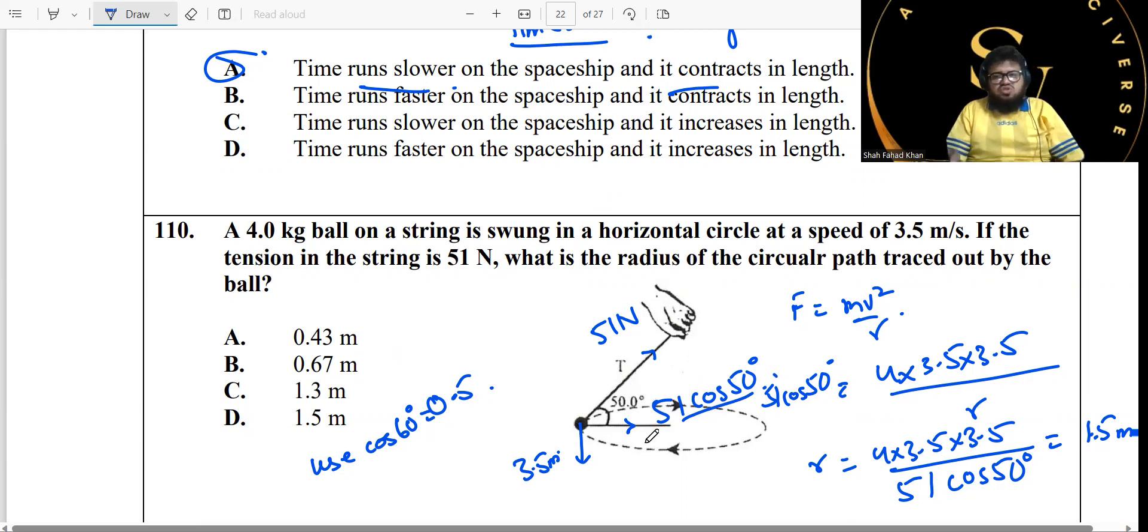Now, once you have that calculated, all you need to do is just find out the radius. Now, you already have the horizontal component over here. They want to calculate the radius. We already know this particular force, which is 51 cos of theta. Because it's a circular motion, we can use this formula, mv squared over r. We have the mass, we have the velocity. The velocity is given to be 3.5.